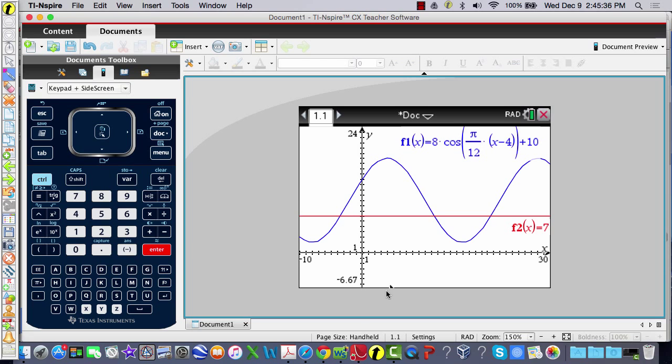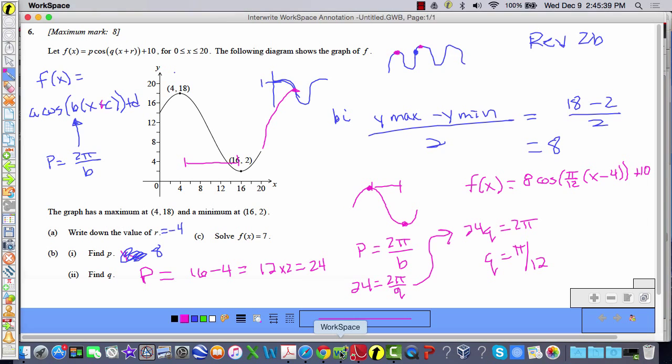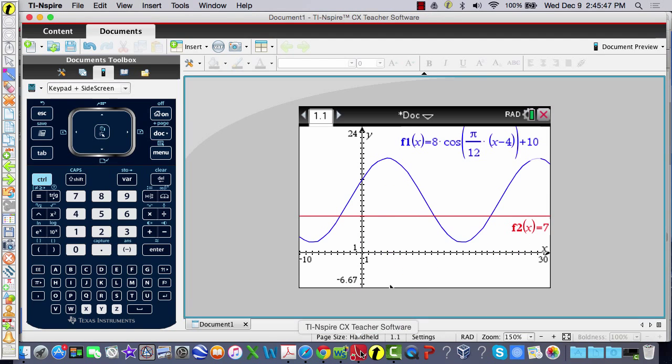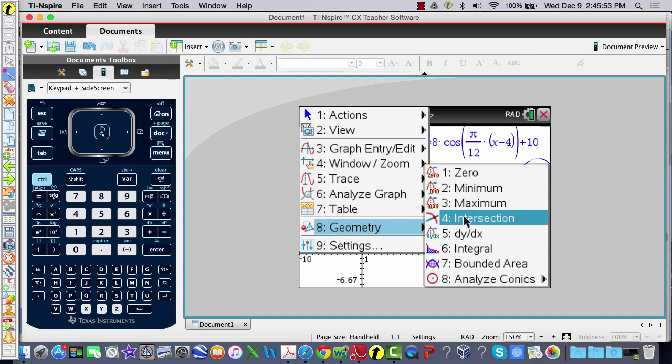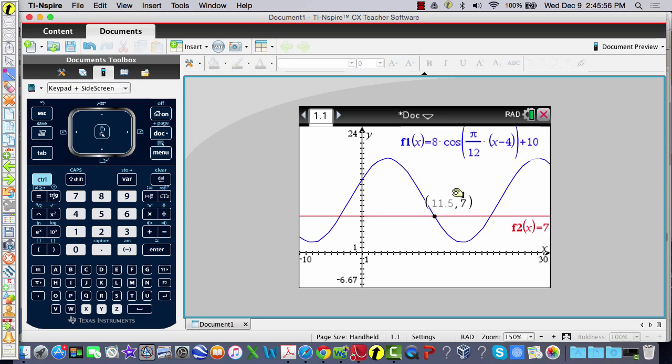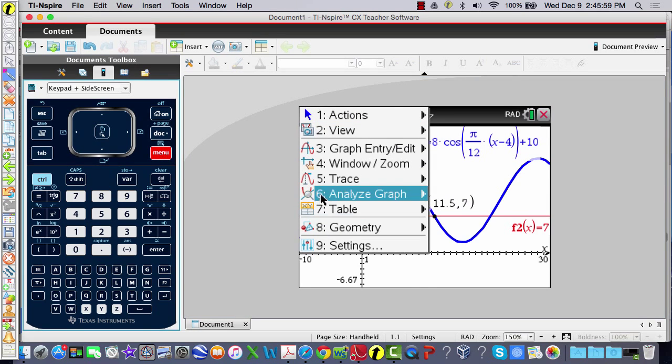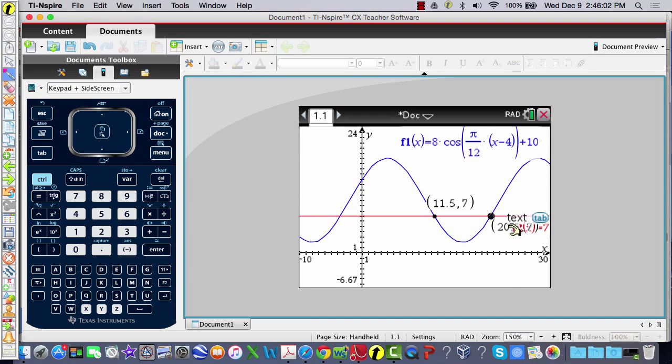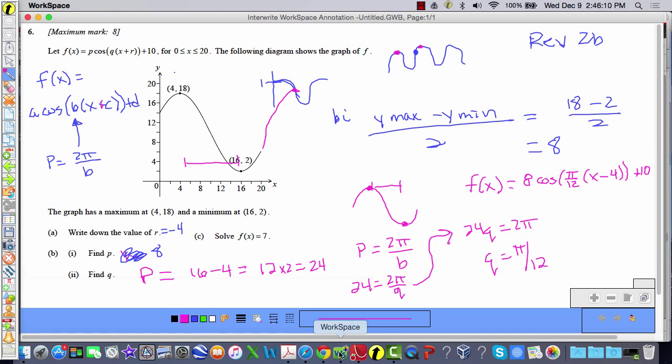I've got to find the intersection points. And I forget if we had a specified, oh, it's for 0 less than x less than 20. That's my domain. So, I only need to go up to 20 for my solutions. So, I'll get my intersections. Menu, analyze graph, intersection. So, I get 11.5. Menu, analyze graph, intersection. And 20.5. So, that's out of the domain. So, my only solution for f of x equals 7 is x equals 11.5.